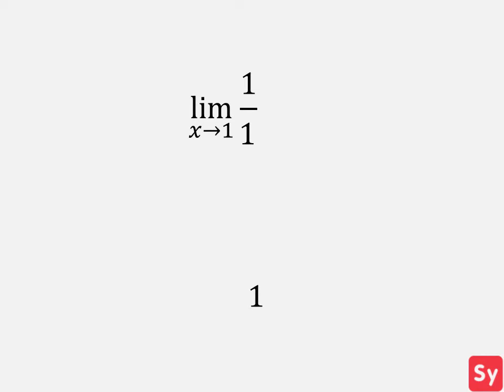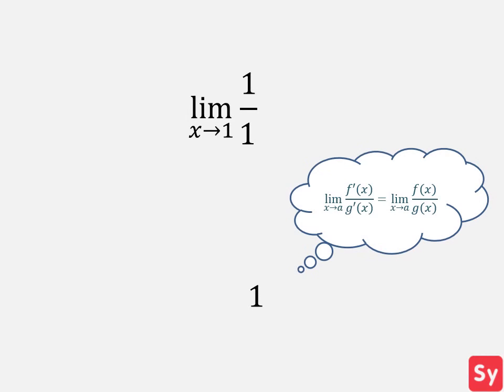This simplifies to 1. We keep in mind L'Hopital's rule that the limit as x approaches a of f prime of x over g prime of x equals the limit as x approaches a of f of x over g of x. Therefore, 1 is the limit.